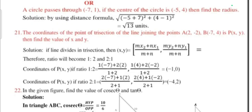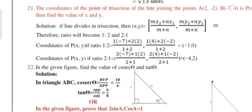Question 21: The coordinates of the point of trisection of the line joining the points A(2, -2) and B(-7, 4) is P(x, y). You have to put section formula. One is 1:2 and another one is 2:1. Two times you have to do it. Question 22: In the given figure, find the value of cosecant θ and tan θ.